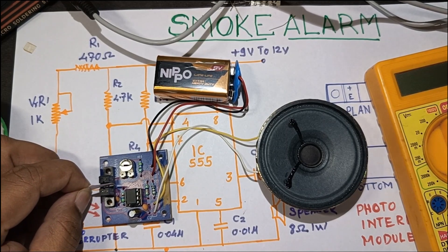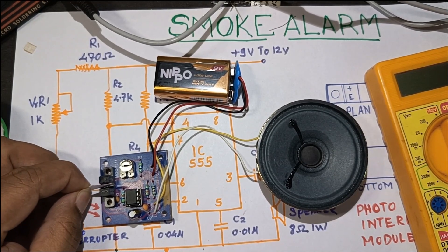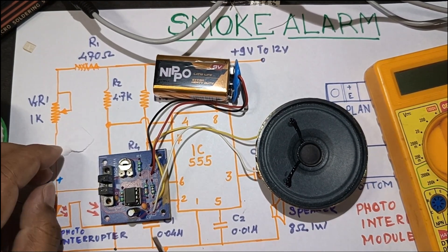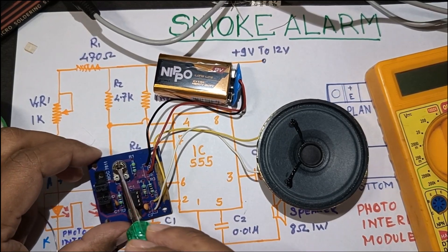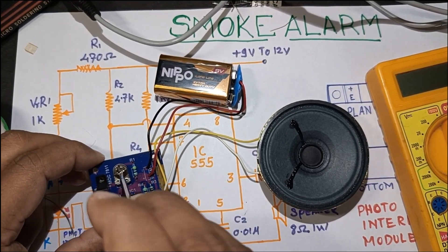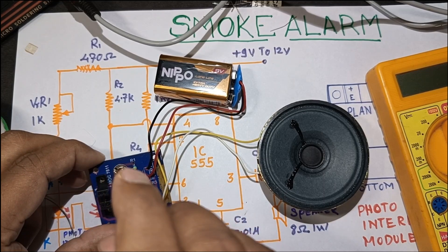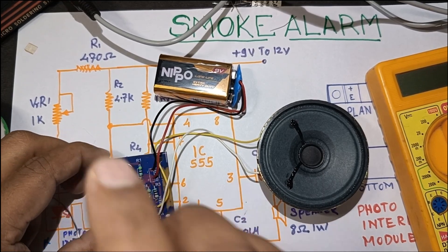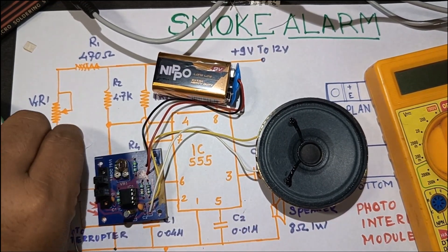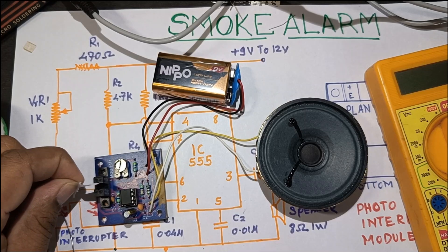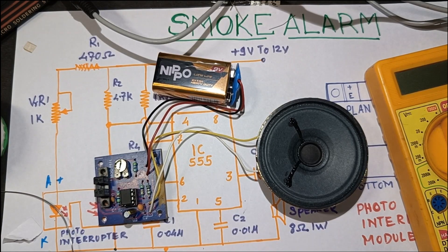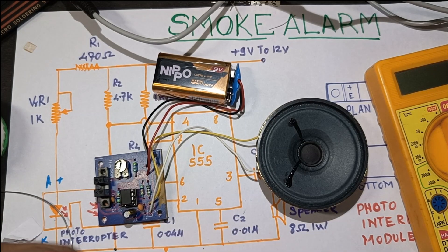Now the sensitivity of this circuitry can be adjusted with the help of this pot. You can see, I have adjusted the sensitivity.